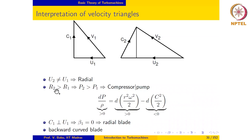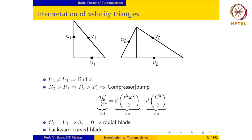Since R2 is greater than R1, dr is positive. Judging by the magnitude of the relative velocity from inlet to outlet, we can see that c2 is less than c1, which means dc is negative. Both these together give rise to dp being positive, which means that p2 is greater than p1. So this corresponds to the rotor of a compressor or a pump.